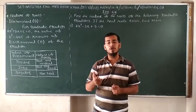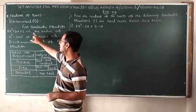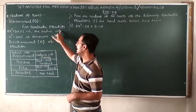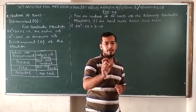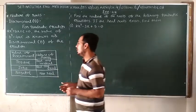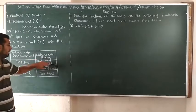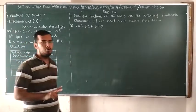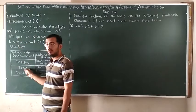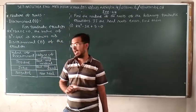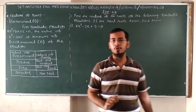That b squared minus 4ac is known as the discriminant — the short form is D. For a quadratic equation ax squared plus bx plus c equal to 0, the value of b squared minus 4ac is known as the discriminant of the equation. Now, if the value of the discriminant — that means b squared minus 4ac — is positive, then the nature of roots is real and unequal, meaning if we get two roots they are both different. If b squared minus 4ac is equal to 0, then we get real and equal roots. And if it is less than 0, we get no real roots.